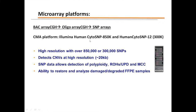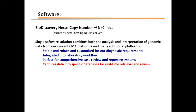Additionally, because this platform is based on SNPs, it allows us to detect additional genomic aberrations such as polyploidy, regions of homozygosity, uniparental disomy, and particularly important for miscarriage samples — the element of maternal cell contamination. A very important benefit of using SNP arrays is the ability to evaluate samples that have been formalin-fixed and paraffin-embedded.